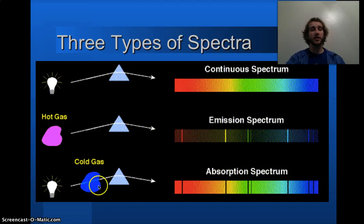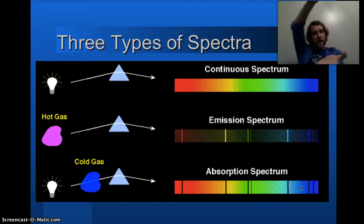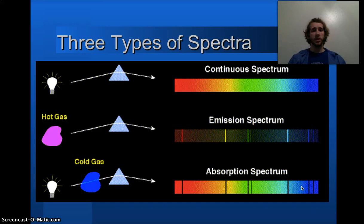Well, you'll notice for this, if this is the same gas, both hot and cold, and if we take the two spectrum, and we were to superimpose them, what would you get? Well, you get the continuous spectrum. You'd get regular white light, all of the light put together.